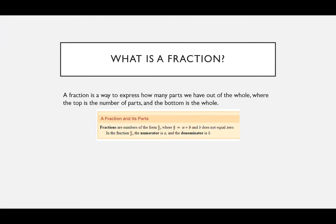Let me start out by reminding you what a fraction is. A fraction is a way to express how many parts we have out of a whole. One half means you've got one part and two parts make up the whole — if you had a pie split into two, half would be one piece. The top is always telling you the number of parts you have, and the bottom is how many parts make up the whole thing. The denominator, which is the bottom, never equals zero because we are not allowed to divide by zero. You can have zero on top — that's the numerator — but it can't be in the denominator.